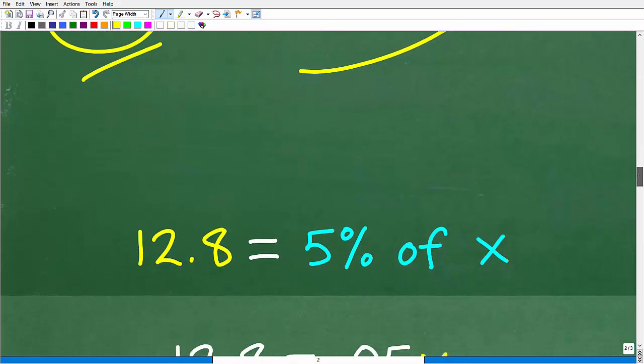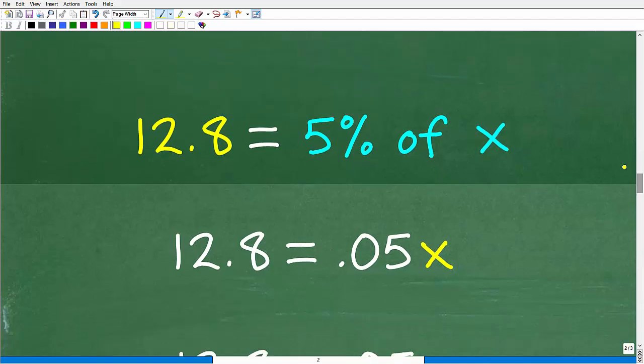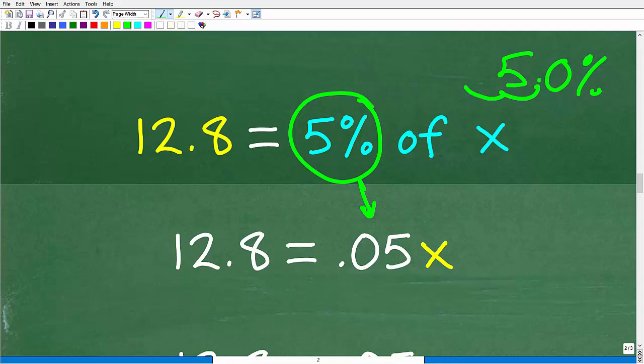Okay, so let's get back to this problem. So here we have 12.8. 12.8 is equal to 5% of what number? So what we want to do here is solve for this number x. We need to change this percent into a decimal. So we're going to take 5, divide it by 100, or move the decimal point over 5.0%. Two places to the left, so we're going to get 0.05, and we're going to multiply it by this number. So now we have a new equation. 12.8 is equal to 0.05x. Algebraically, 0.05 times x is the same thing as 0.05x.